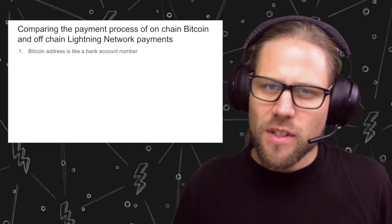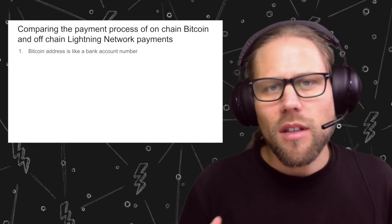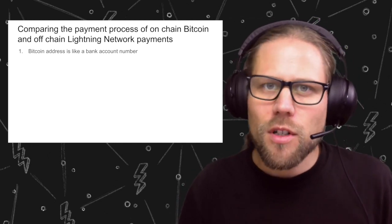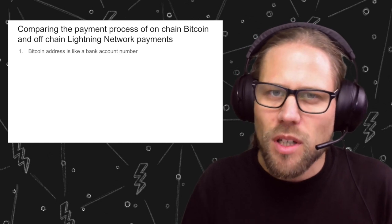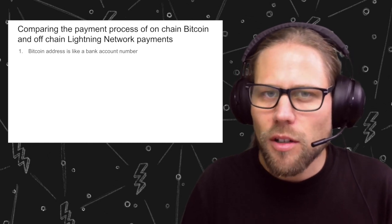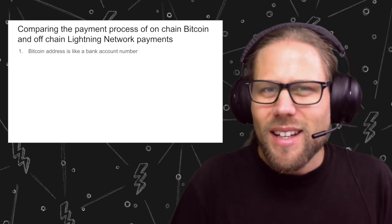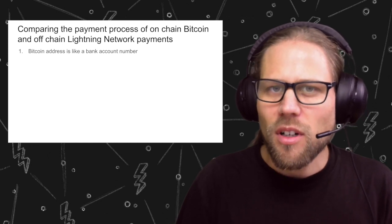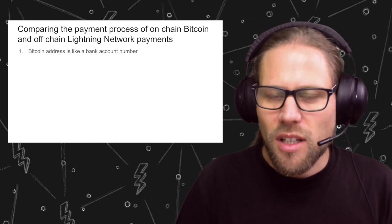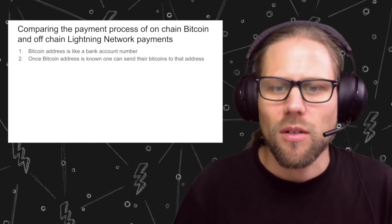I want to compare the payment process of Bitcoin on-chain with the off-chain approach of the Lightning Network. Starting with Bitcoin — when you have a Bitcoin address, it is basically like a bank account number and anybody can transfer money to that account number.